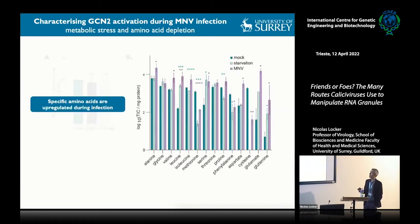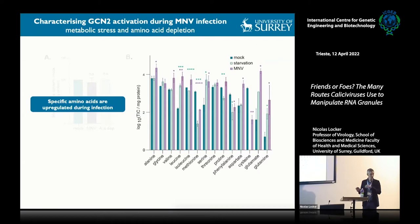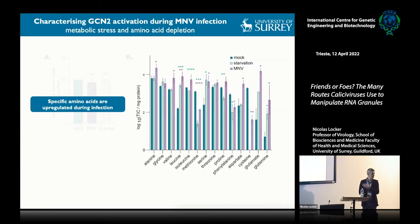Interestingly, those depleted amino acids are the ones highly enriched in viral protein sequences. Norovirus only makes six to eight proteins, and because they're small they don't have a random distribution of amino acids. The ones enriched in viral proteins are the ones we see depleted in the cellular pool—which makes sense, the virus consumes the amino acids present in the cell, and this could potentially trigger metabolic stress.